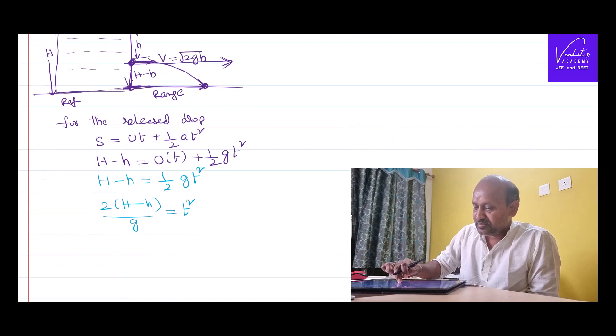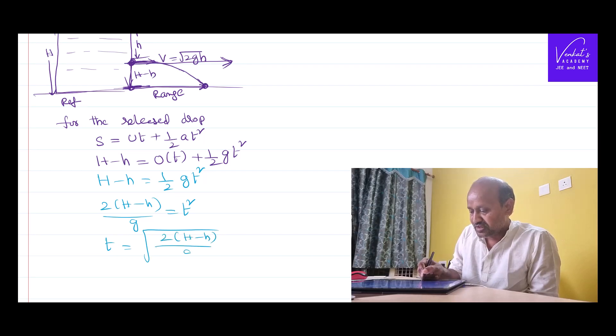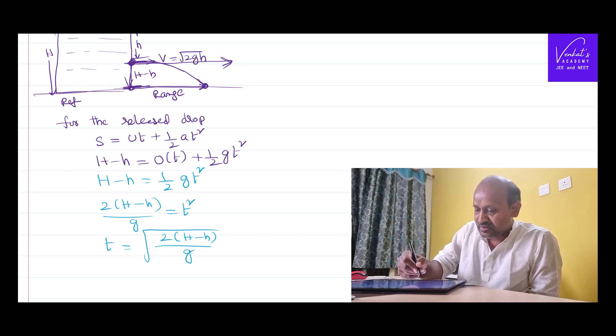Time taken by that drop to reach the floor is square root of 2(H minus h) by G. This is the time we have calculated.